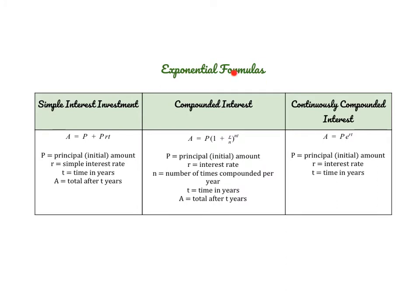Now we're going to talk about some useful formulas that involve exponential functions. There are three we'll work with today, and one of them does have base e. The first is simple interest investment. It looks like this: A equals P plus P times R times T. P is the principal — the initial amount you invest. R is the simple interest rate written as a decimal, not a percentage. T is the time in years. And A will be the total that your investment is worth after T years.